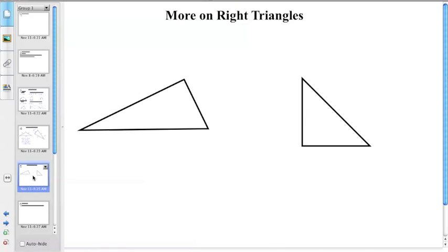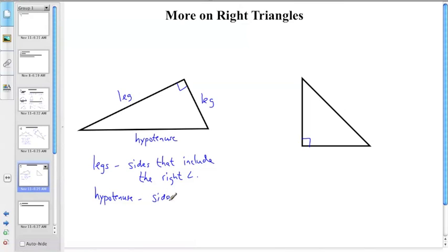Finally, right triangles. So if this is a right triangle and this is a right triangle, we call the two sides that include the right angle legs. And then we call the opposite side the hypotenuse. So the legs are the sides that include the right angle, and the hypotenuse is the side opposite the right angle.